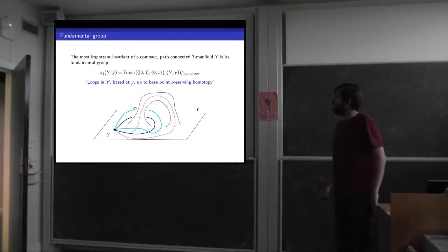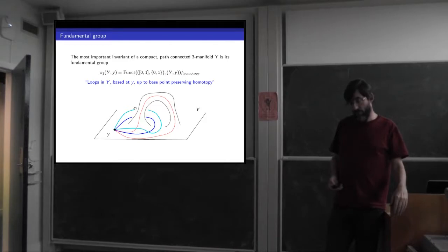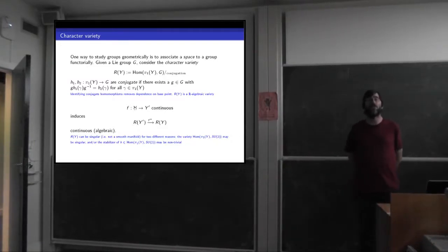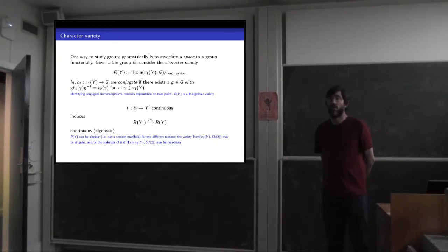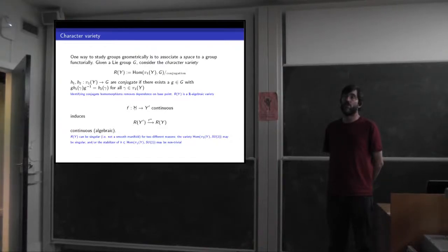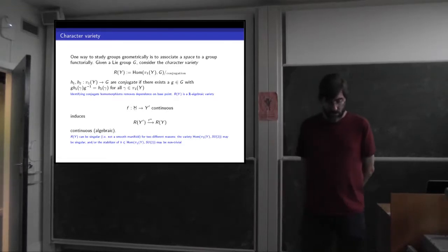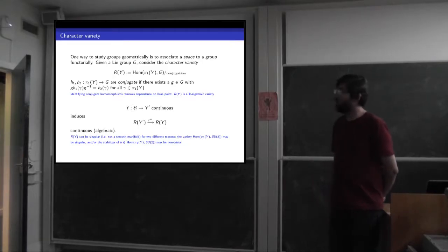To turn this into a group you put an equivalence relation on the loops — homotopy relative to the base point. Two loops are homotopic if you can deform one into the other without pulling it through anything. The fundamental group is an algebraic object you assign to a topological space, and it's very powerful. In three-dimensional topology, the fundamental group is the most important invariant.